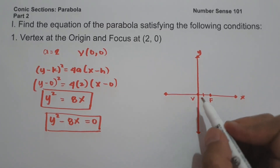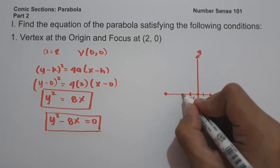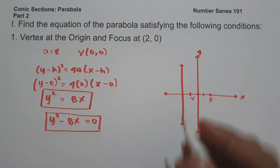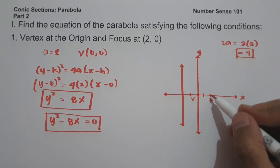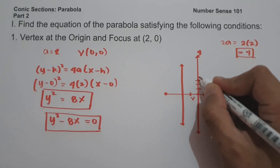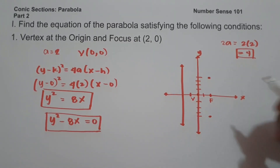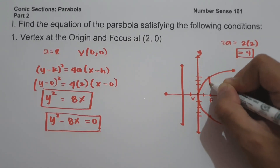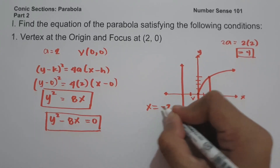To sketch the graph, since the distance between the vertex and the focus is 2 units and the vertex is the midpoint between the focus and the directrix, we count 2 units to the left to find the line of the directrix. To find the endpoints of the latus rectum, we compute 2a = 2 × 2 = 4. We count 4 units upward and downward from the focus. The endpoints of the latus rectum are (2, 4) and (2, −4). The equation of the directrix is x = −2.